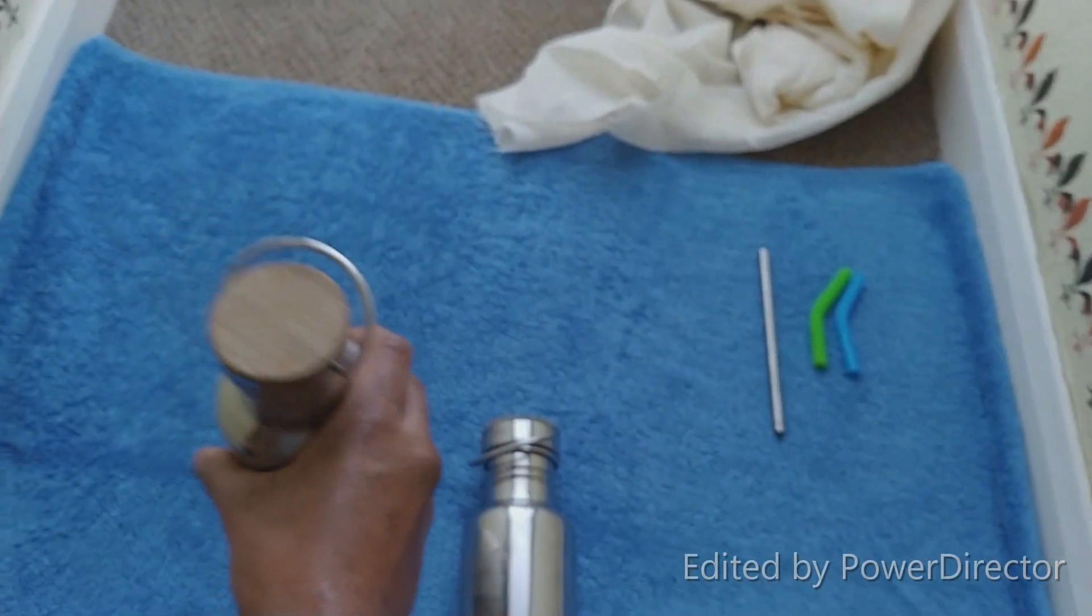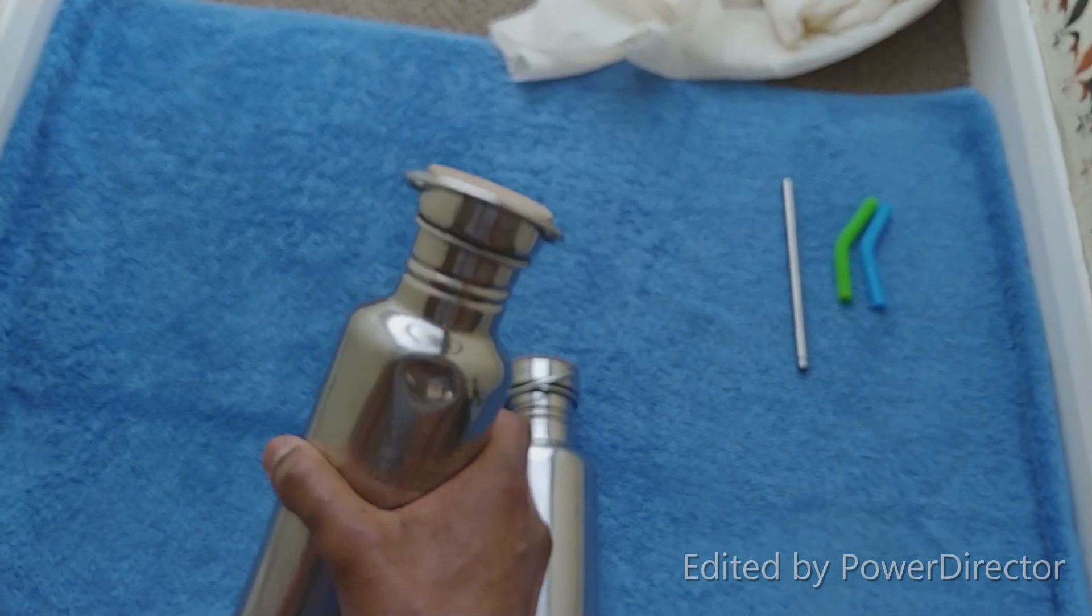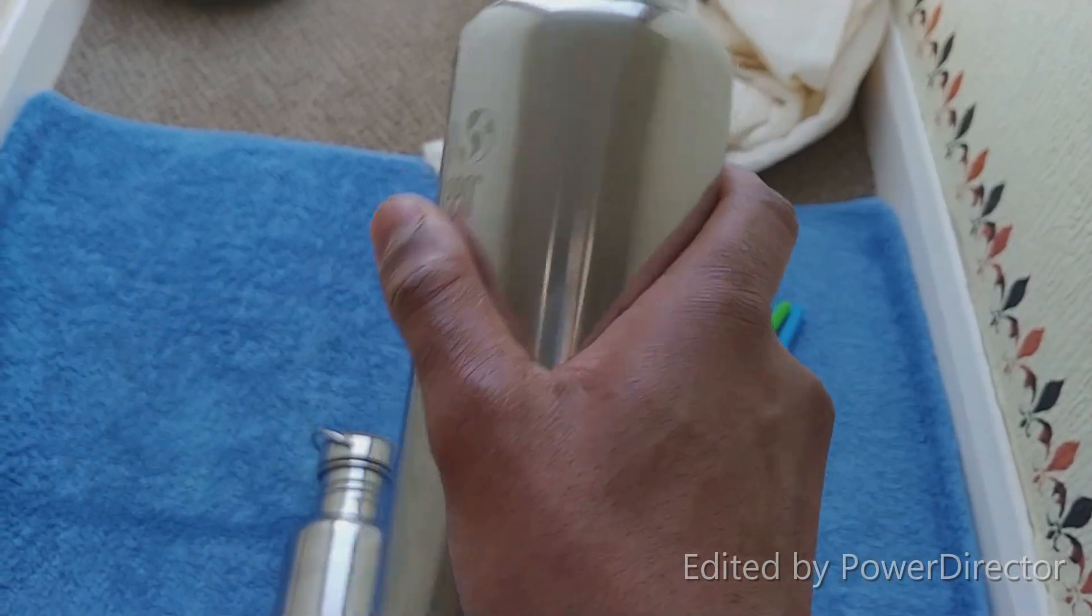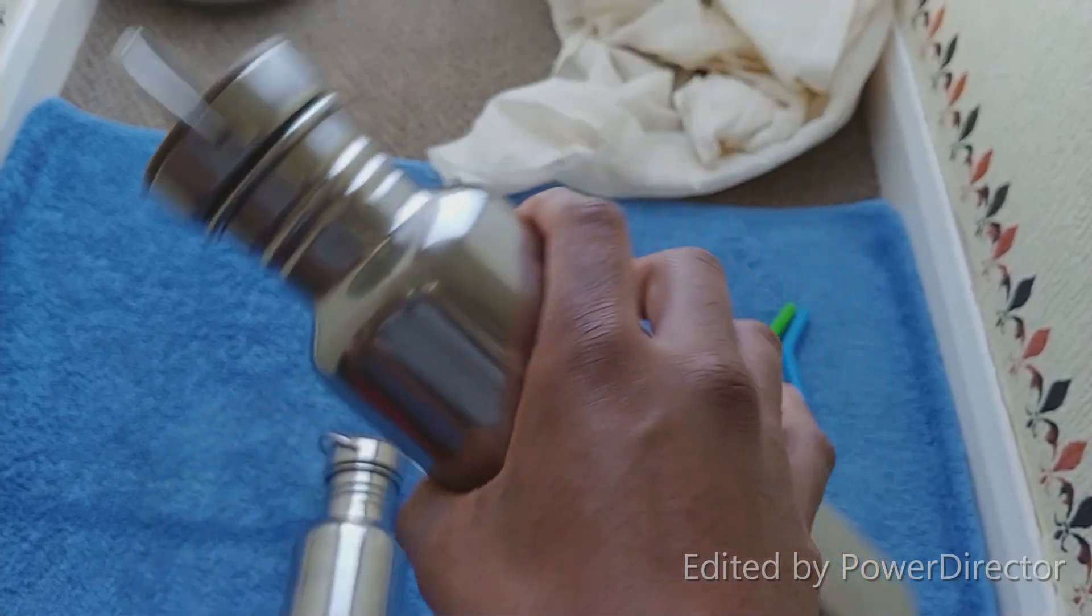The reason why it dents like this is because the metal is very thin, which is good because it's extremely light. It feels just as light, if not lighter, than a plastic bottle of the same size. There's nothing bad about that construction.